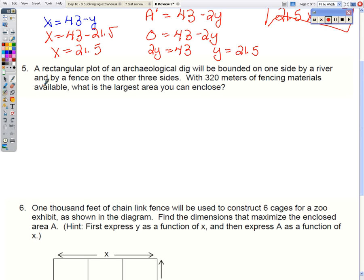Okay, number 5 here is very similar to the barn one. We've got the river and a rectangular plot. So 2x plus y has to equal the fencing for the perimeter.